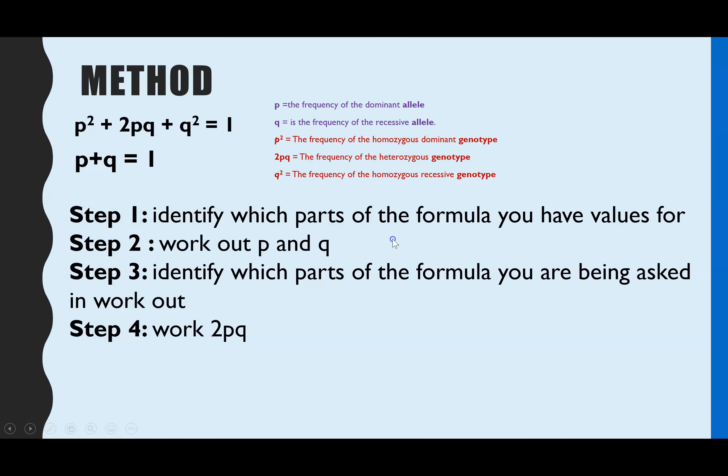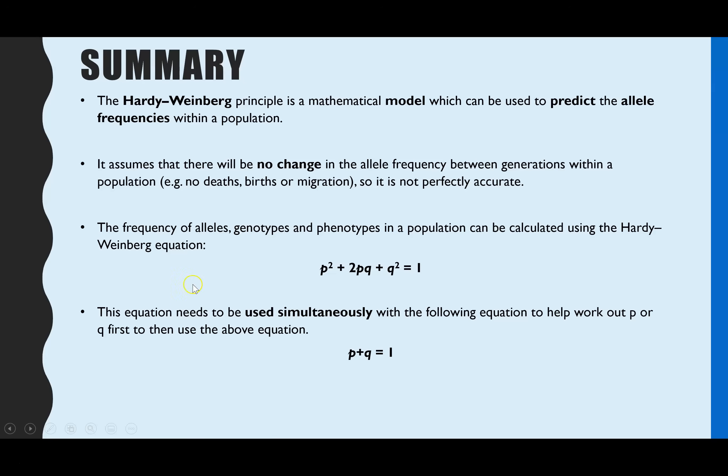It's following these steps. Always step one, identify what information you have been given. Then you work out P and Q. Then you look back at the question to see what you're actually being asked to identify, and then you work that out. That's not always going to be 2PQ. It was for the two examples we had, but it could be you're then working out Q squared or P squared and so on.